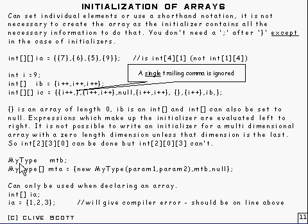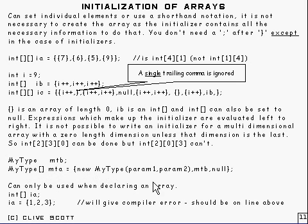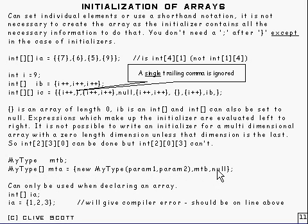Here's another example with MyType. There's an array of MyType, and you can use 'new' in there, put expressions like this in the initializer — this is some sort of constructor obviously taking some parameters. You can just put that in there, and null is fine again.